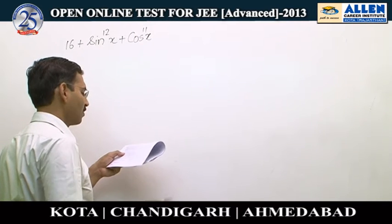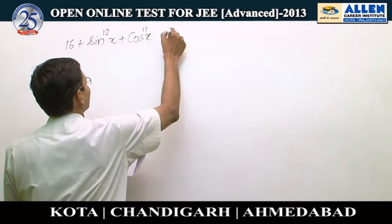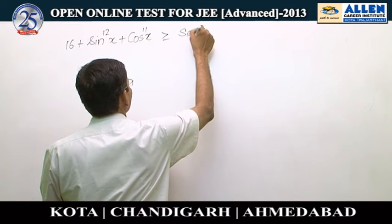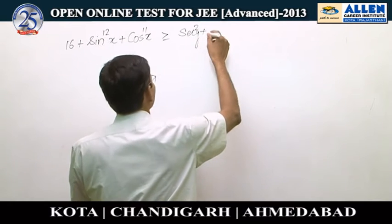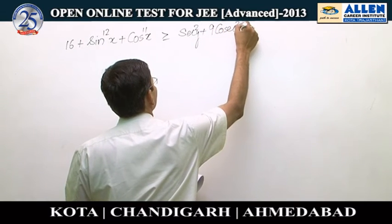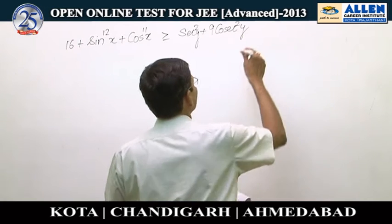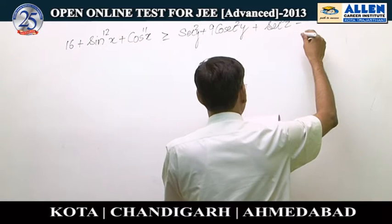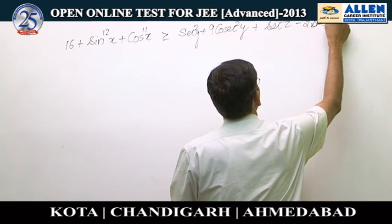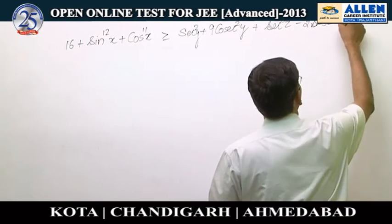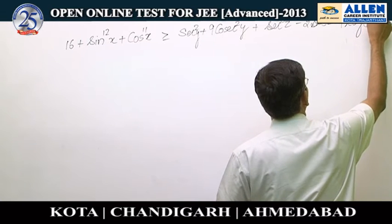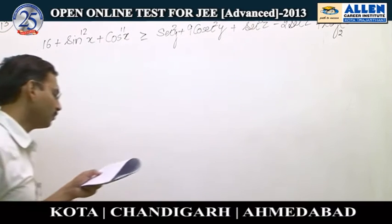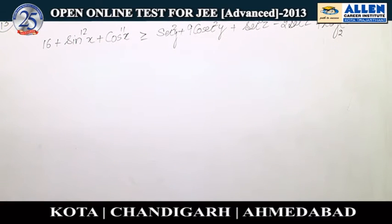Sec squared y and cos squared y go on the right hand side. Then it is greater than or equals to sec squared y plus 9 cos squared y plus sec z raised to the power 8 minus twice sec z plus log of (5 minus cos squared x) to the base 2, and x, y, z all three are belonging to the closed interval 0 to 2π.